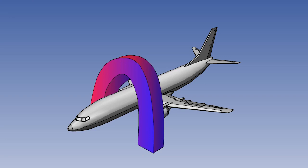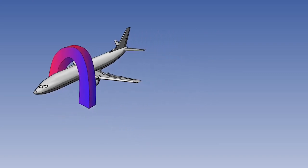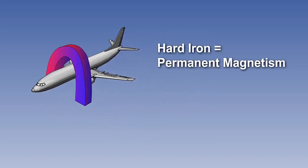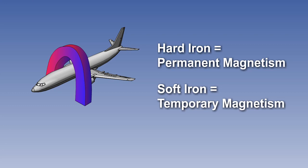Magnetism can be divided into hard iron and soft iron. Hard iron can be considered to be permanently magnetised, and will make up the permanent magnetic field of the aircraft. Whereas magnetism in soft iron will be induced only while there is an external magnetic force present.